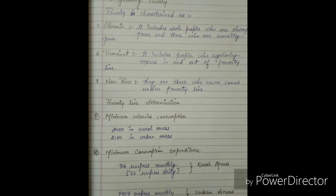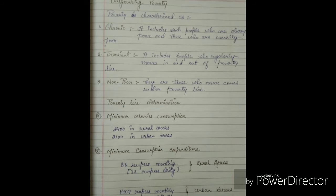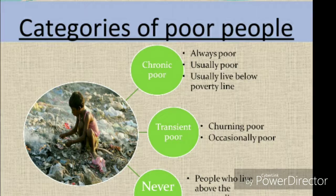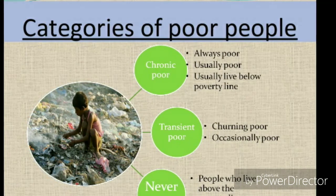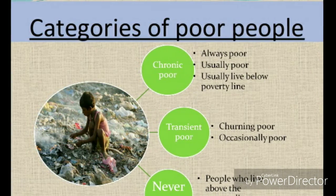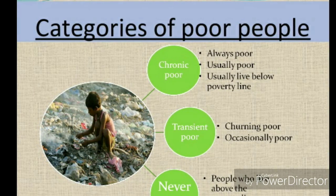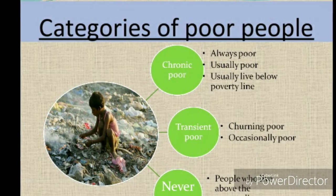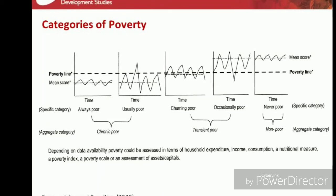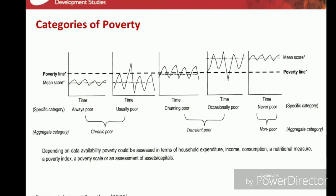The first category is chronic poor, which includes always poor and usually poor. Always poor are those who cannot afford the basic necessities of life because they are not working or earning. Usually poor, such as casual workers, may sometimes have a little more money, but they still fall under the category of chronic poor.